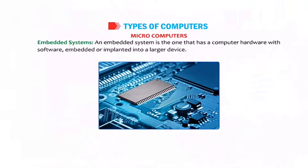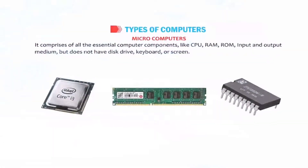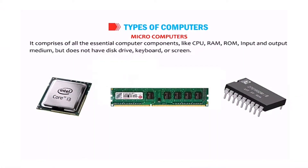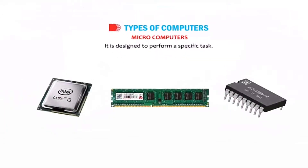Embedded systems: an embedded system is computer hardware with software embedded or implanted into a larger device. It has almost all important computer components like CPU, RAM, ROM, and input and output medium, but does not have a disk drive, keyboard, or screen. It is basically designed to perform a specific task.